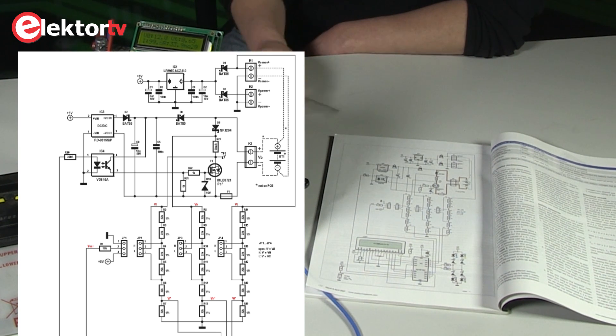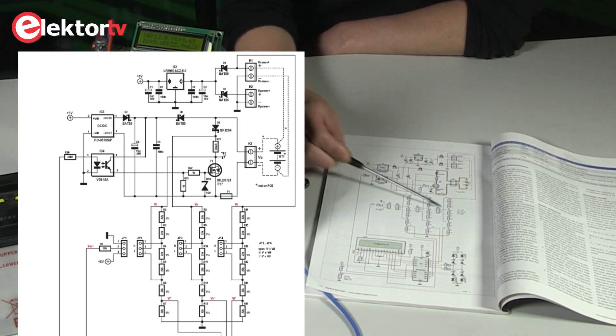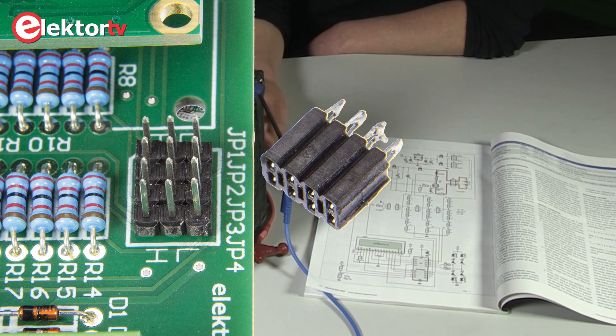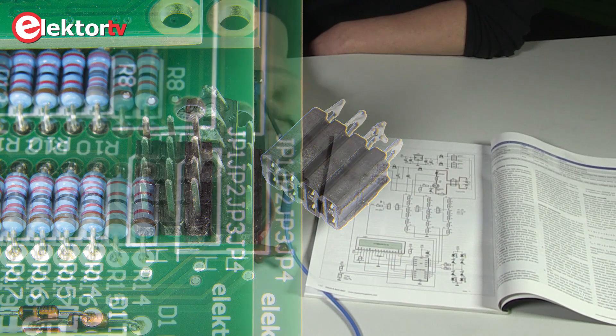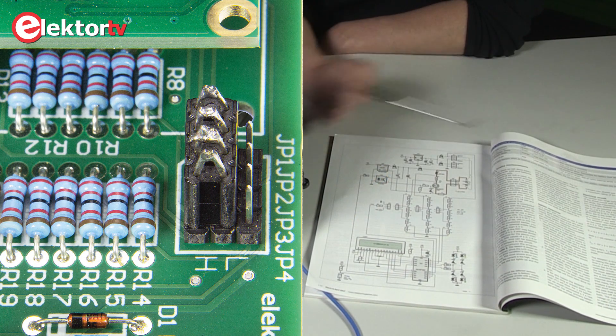But there are three ranges you can adjust here with these jumpers to select batteries from 0 to 10 volts to 20 volts or to 30 volts.